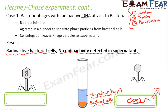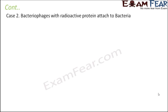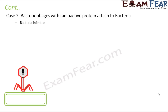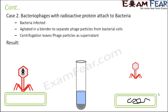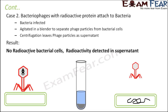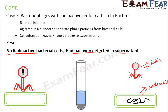The same experiment was repeated with the second set of bacteriophages with radioactive protein. Again bacteria got infected, agitated in a blender, and centrifugation was performed. In this case, it was observed that there were no radioactive bacterial cells, but radioactivity was detected in the supernatant — meaning radioactivity was present in the bacteriophage but not in the bacteria. That means the protein is not passed on from the bacteriophage to the bacteria.